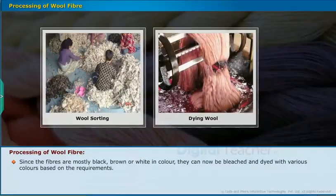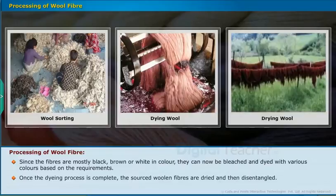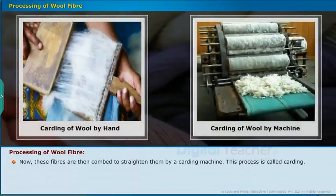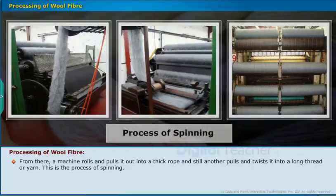After washing, the hairy skin is sent to a factory where hairs of different textures are separated and sorted — a process called sorting or wool classing. The fibers are mostly black, brown, or white in color and can be bleached and dyed with various colors. Once dyeing is complete, the wool fibers are dried, disentangled, and combed to straighten them by a carding machine, in a process called carding. A machine then rolls and pulls the fiber into a thick rope and twists it into a long thread or yarn — this is spinning.